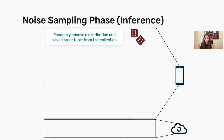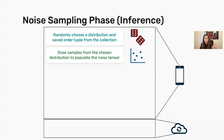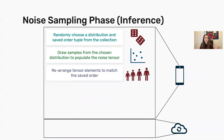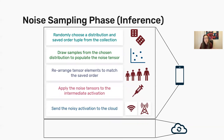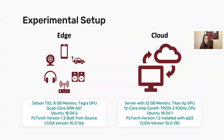Once we have collected the noise distribution parameters and their orders, during inference we randomly choose a tuple of distribution and orders from our collection. We sample from that Laplace distribution using the saved parameters to populate the noise tensor, reorder the elements to match the saved order, add this noise to our intermediate activations, and send it off to the cloud. The cloud runs the rest of the computation and gives us back the final results.